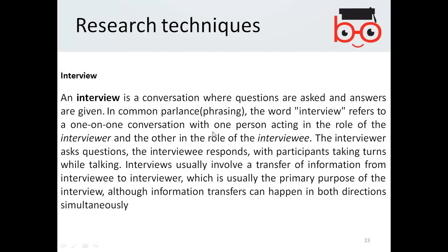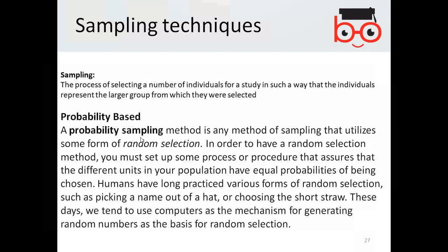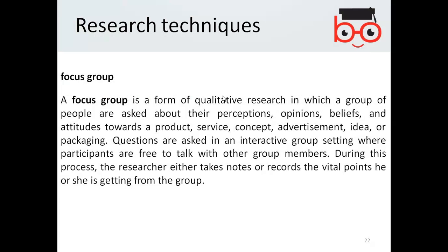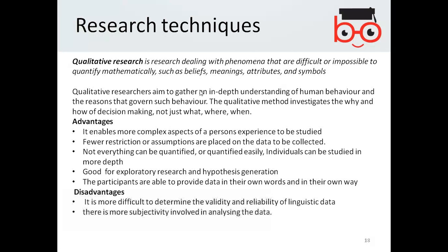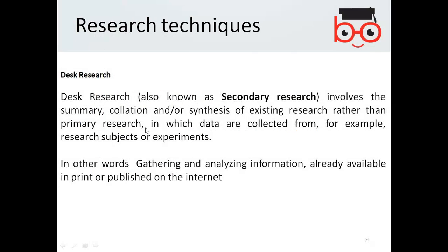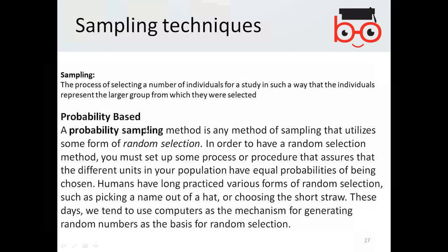Skipping a few more research types such as online research community, mobile research, and survey. Now moving to sampling. Sampling is the process of selecting a number of individuals for a study in such a way that the individuals represent the larger group from which they were selected. Sampling is basically about how many people you will be doing your research on.